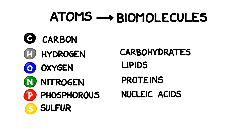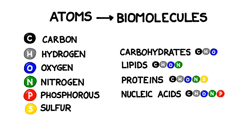Different groups of atoms combine to form biomolecules. When we talked about carbohydrates and lipids, we used carbon, hydrogen, oxygen, and sometimes nitrogen. Now that we're discussing proteins and nucleic acids, we're going to add phosphorus and sulfur to the mix.